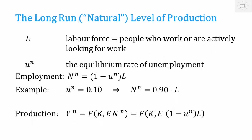Now we come to the long run, or what economists call the natural level of production — the normal level of production over the business cycle, neither in a boom nor a bust. We define the labour force L as all people who work or are actively looking for work. Those not working but actively looking are the unemployed, and normally in a market economy we have some unemployment.